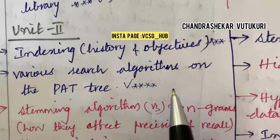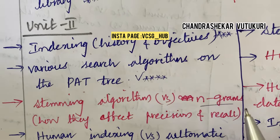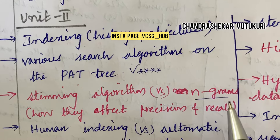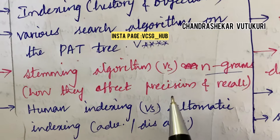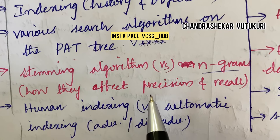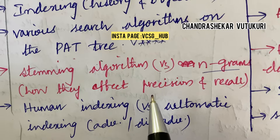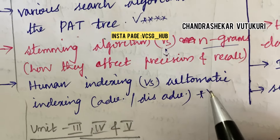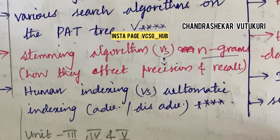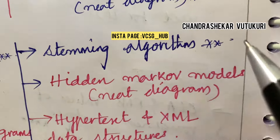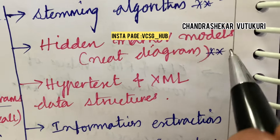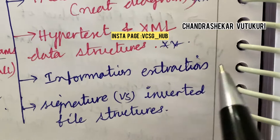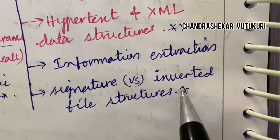Make sure to work out the pad tree question. Stemming algorithm versus n-grams is important. How they affect precision and recall — human index versus automated index is a topmost question, along with its advantages and disadvantages. Stemming algorithm is also a topmost question. Hidden Markov Models is an important equation along with the knee diagram. Hypertext and XML data structures are short questions, and information extraction and signature versus inverted file structures are also very important.